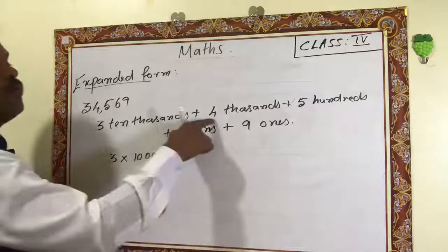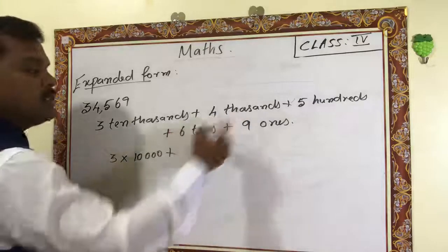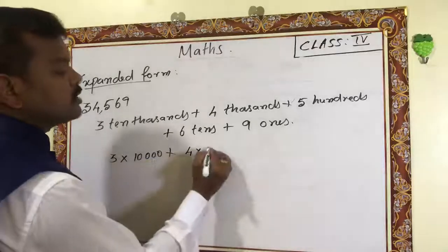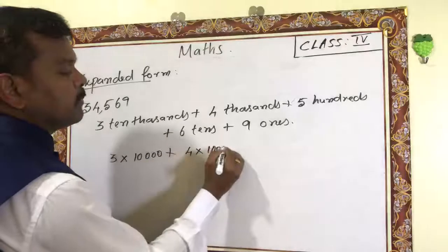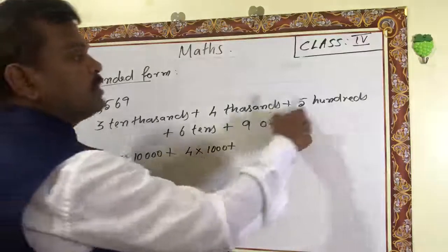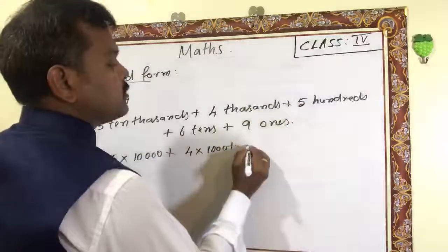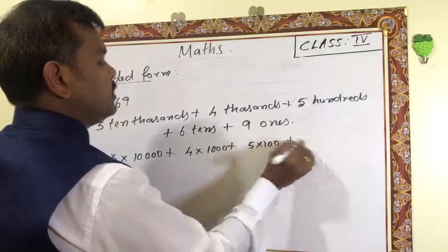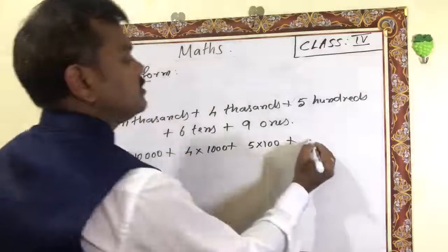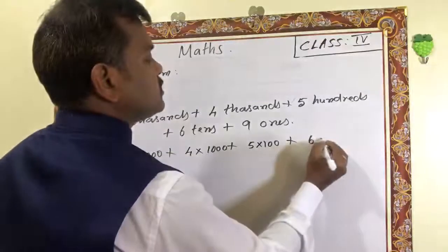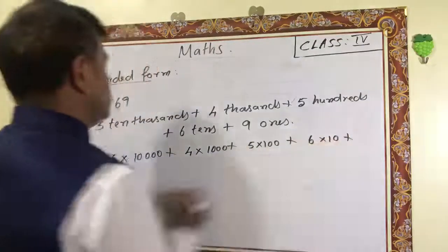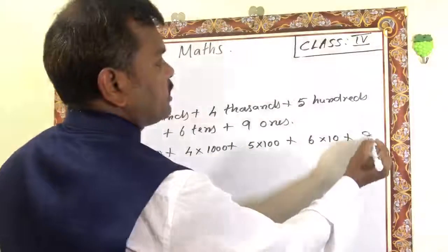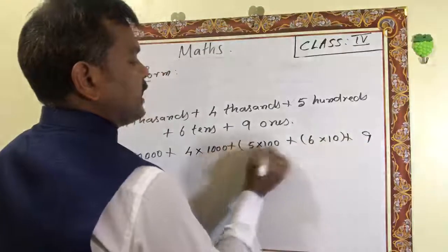So we can write it as: three times ten thousand, plus four times thousand (four into thousand), plus five times hundred (five into hundred), plus six times ten (six into ten), plus nine. This last number you have to put in brackets.